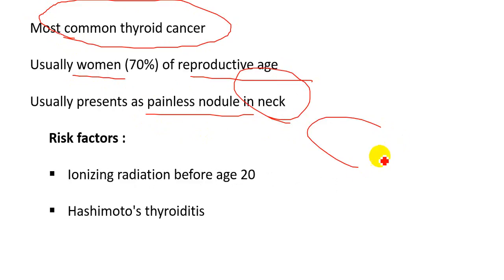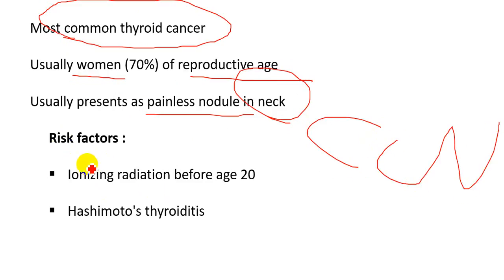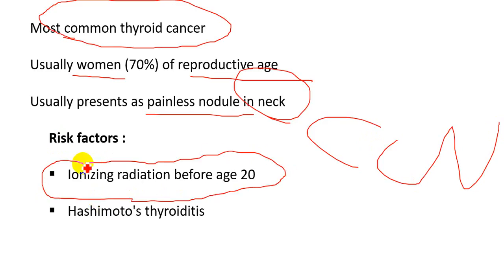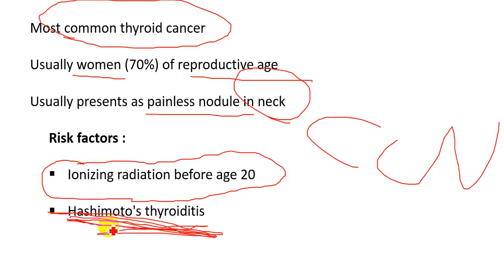The most important risk factor for papillary carcinoma of the thyroid gland is exposure to ionizing radiation before the age of 20. People get exposed to ionizing radiation before the age of 20 during radiation therapy for acne and for treatment of non-Hodgkin's lymphoma.